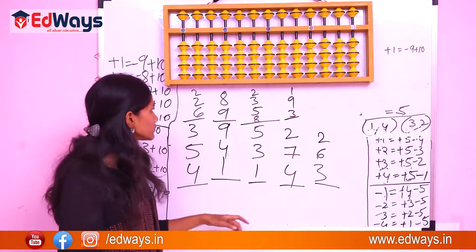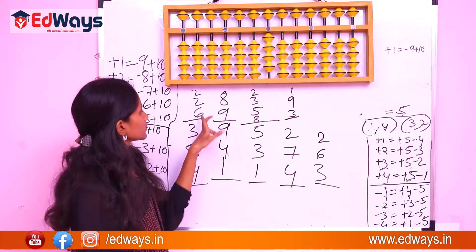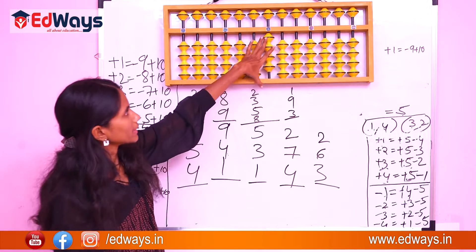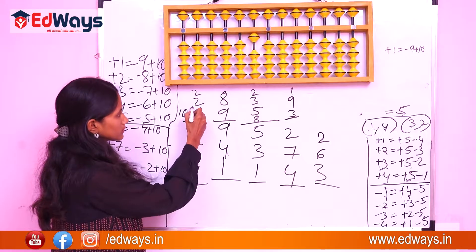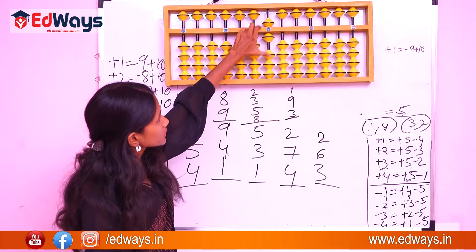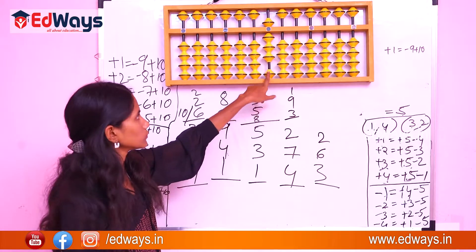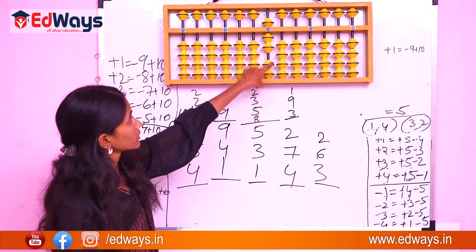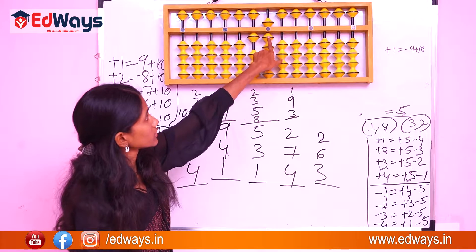Example: 2 plus 2 plus 6. The complement of 6 is 4, so minus 4 plus 10 — the answer is 10. Next example: 8 plus 9. Represent 8 as 5, 6, 7, 8. Now add 9 — 9 is not available. 9's complement is 1, so subtract the complement and add 10. The answer is 10, 15, 16, 17.